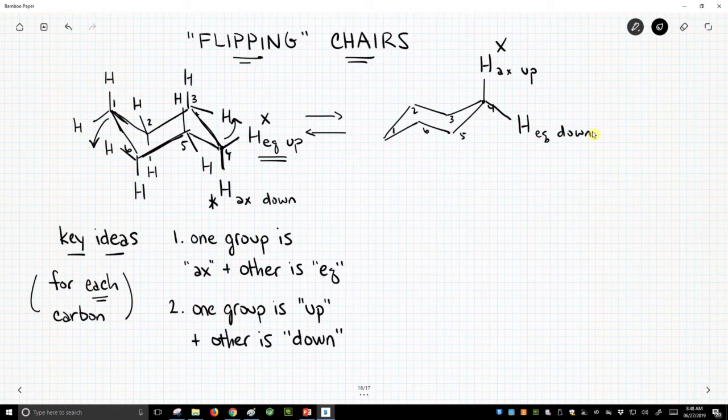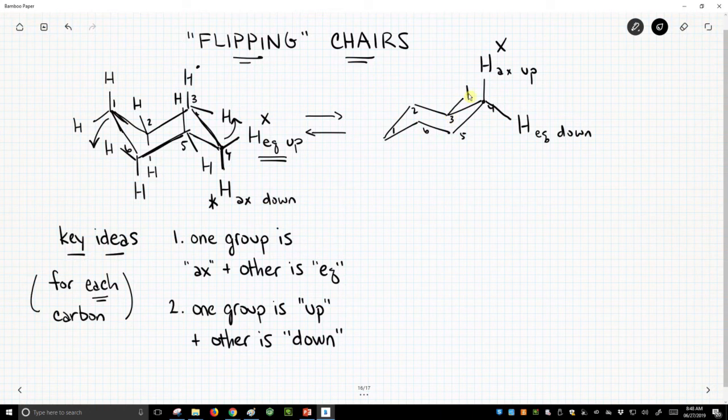Now let's go ahead and fill in our other hydrogens. This particular hydrogen, it was axial up. It will now be up, but it's now equatorial up in that orientation. And this particular hydrogen off of carbon three, it was equatorial down. It is now axial down, and that is too close to that carbon. Sometimes your pictures don't come up perfectly.